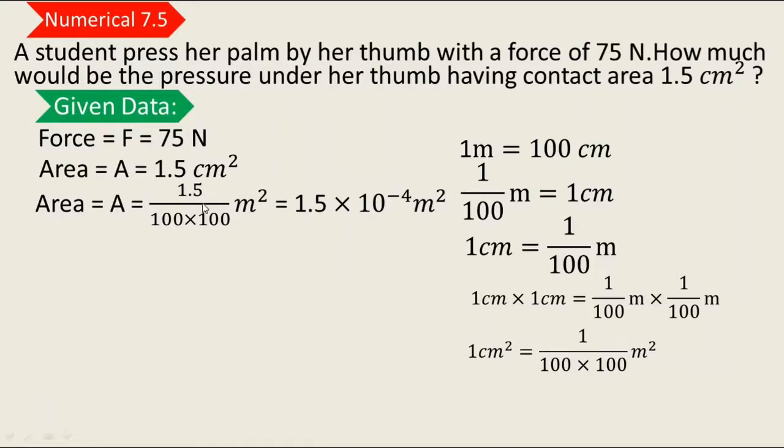This is 10⁻⁴. So 1.5 cm² converts to 1.5 × 10⁻⁴ m².